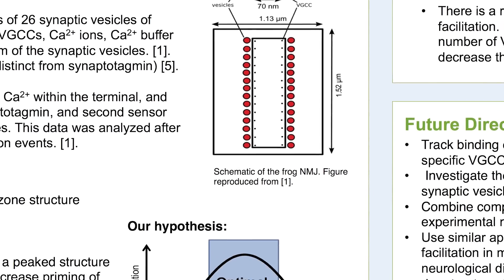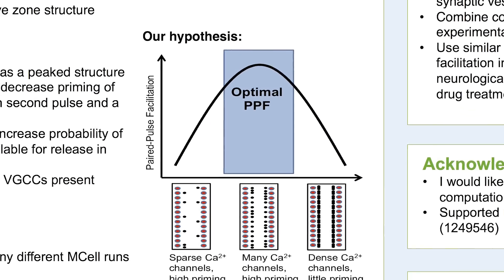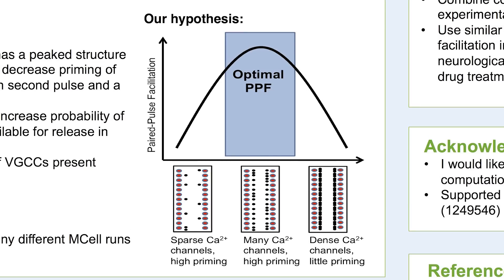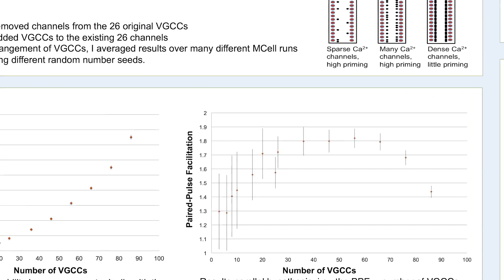The overarching goal was to see how structure affects active zone function. We had a hypothesis about a peaked relationship between the number of voltage-gated calcium channels and synaptic facilitation, which was represented by the per-pulse facilitation. Our simulation results matched our hypothesis.